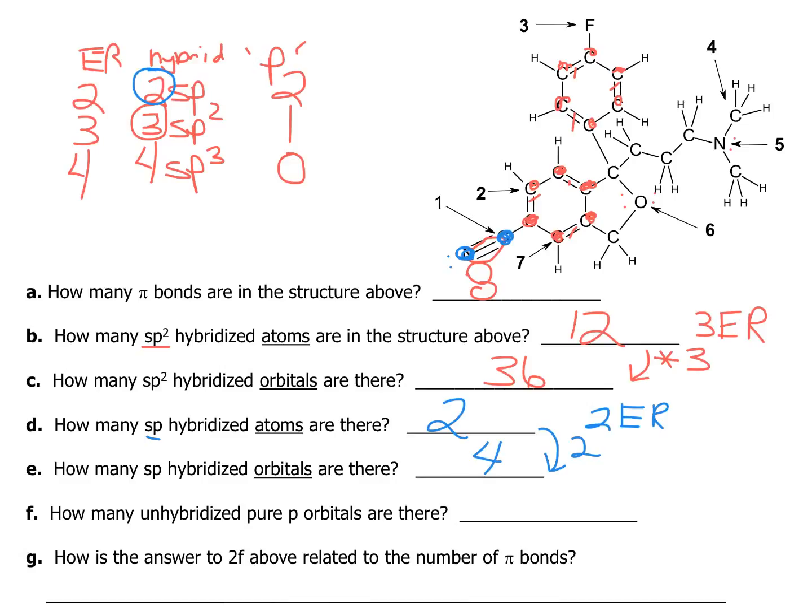The last two questions ask us how many unhybridized pure p orbitals are there. Well, if we have 12 sp2 centers, remember that an sp2 center has one leftover unhybridized p, so that would be 12 times 1. If we have two sp hybridized centers, remember those have two unhybridized p's left over. So that would be the two centers times the two unhybridized p. That gets us 16.